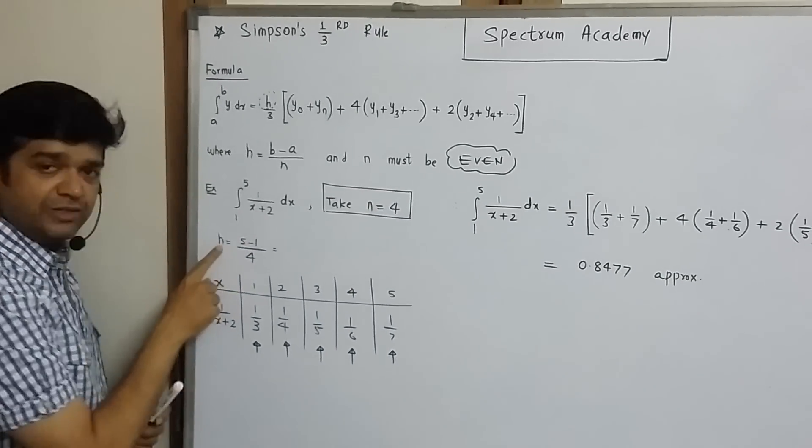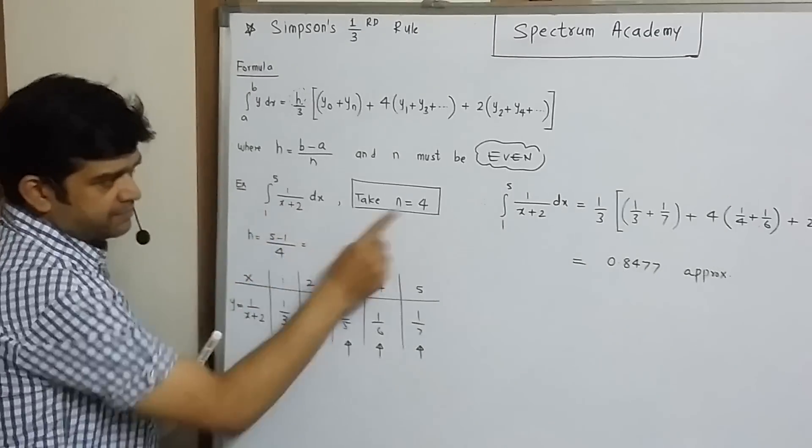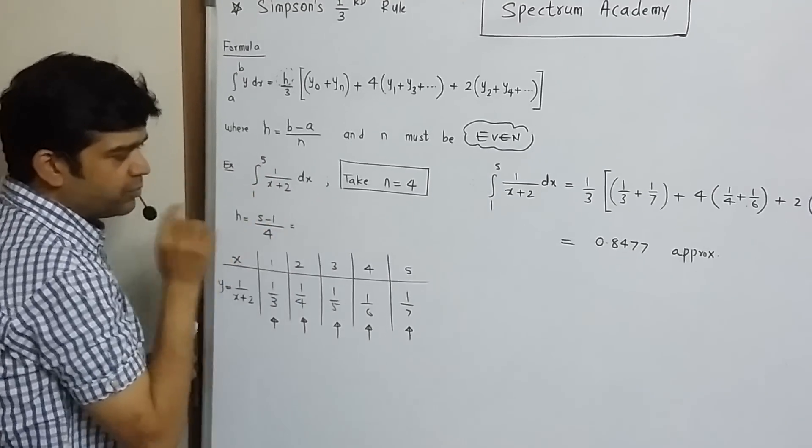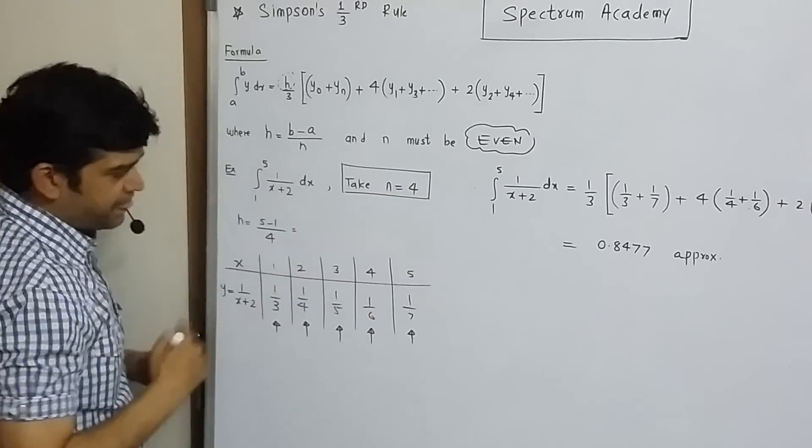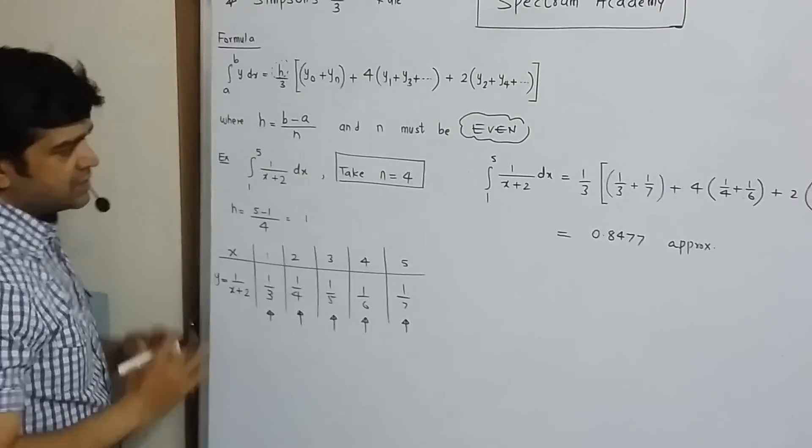So, first what we do, we calculate h. 5 minus 1 upon 4, where 5 is upper limit, 1 is lower limit and n is 4. So, b minus a upon 4 and that is 1.